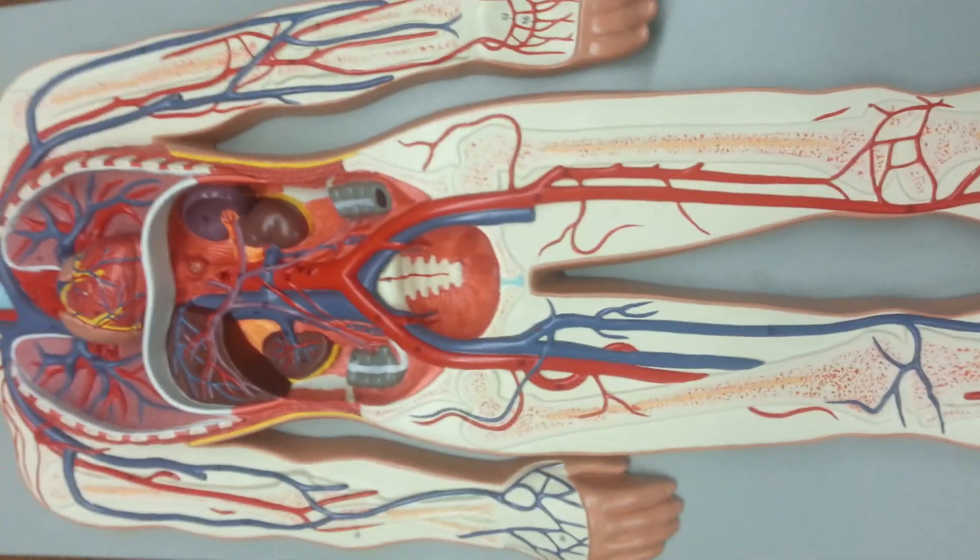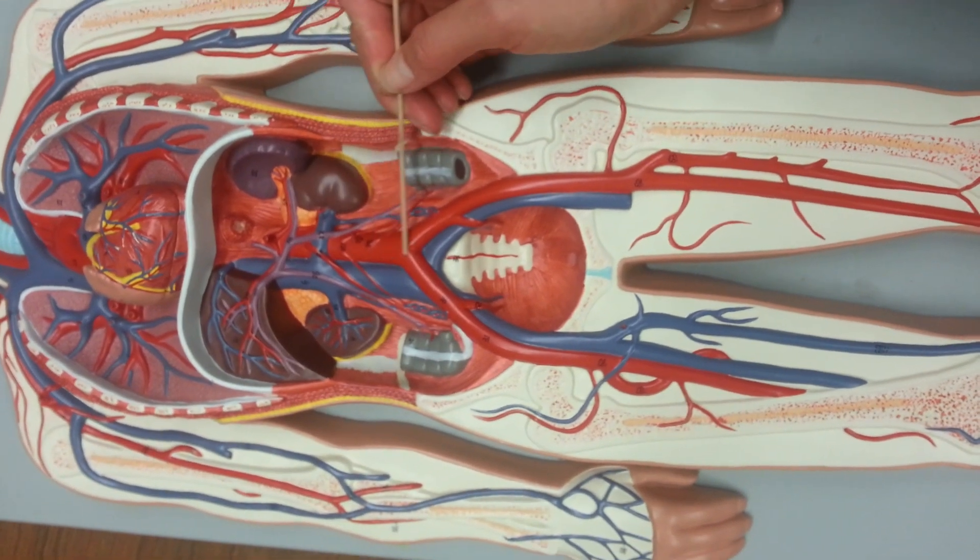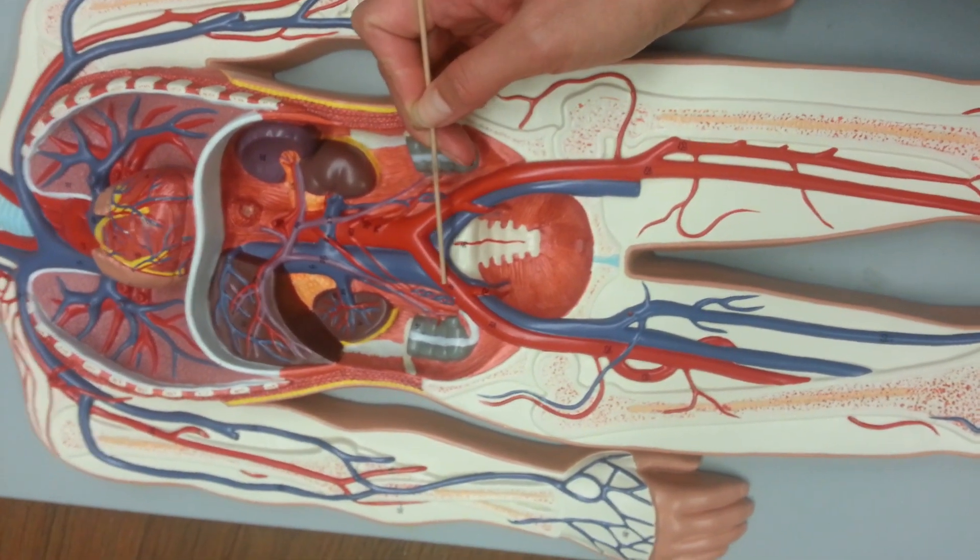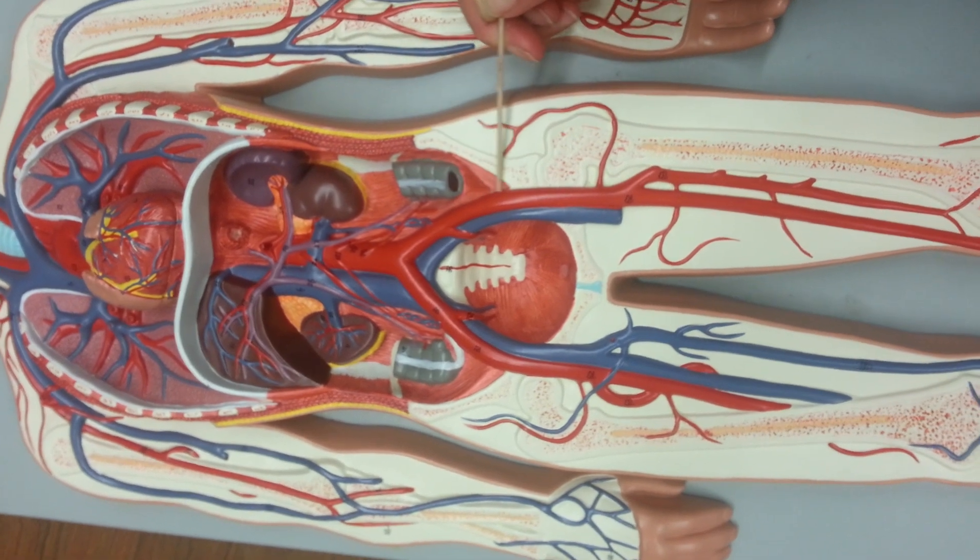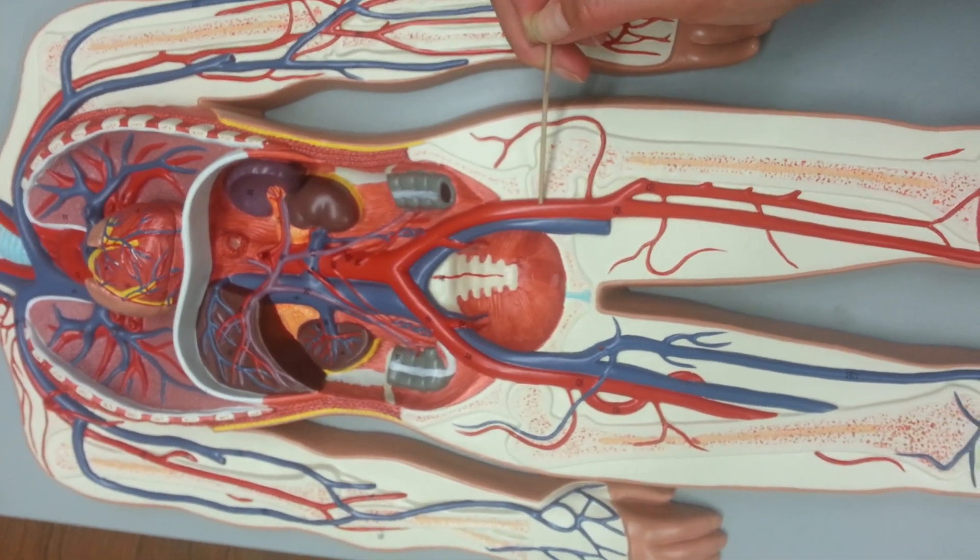Now let's go ahead and make sure we get blood down to our legs. So we can come down the abdominal aorta, split into the common iliac artery to the right and left, and then once we get to the femur bone right here, now we change into the femoral artery.